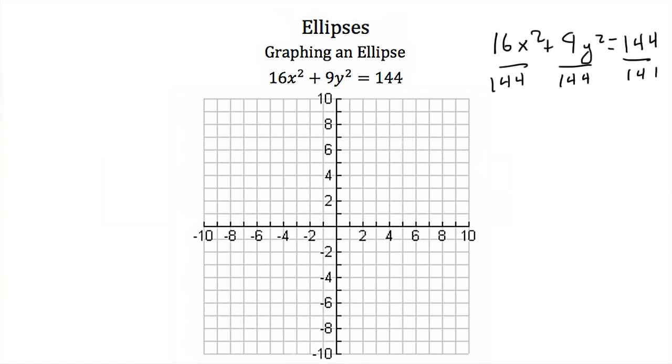If I do that I'll have x squared over 9 plus y squared over 16 and that's equal to 1. You can also think of this as x squared over 3 squared plus y squared over 4 squared and that's equal to 1. This means that my a is equal to 3 and my b is equal to 4.